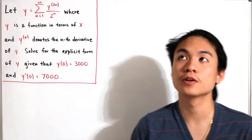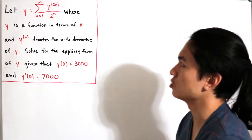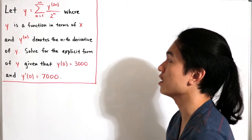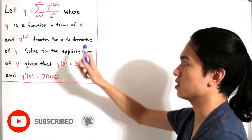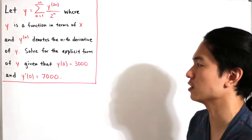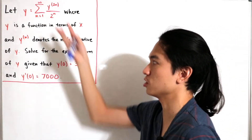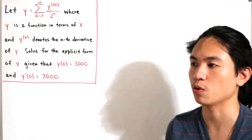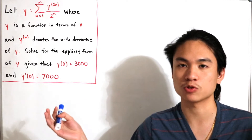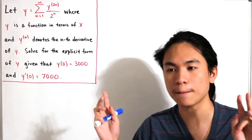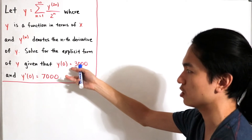Welcome back. Today's question is an ODE problem: let y equal the infinite sum of y^(2n) divided by 2^n, where y is a function of x and y^(n) denotes the nth derivative of y. Solve for the explicit form of y given that y(0) = 3000 and y'(0) = 7000. We have initial conditions, and we want to find the explicit form.